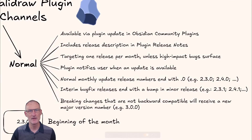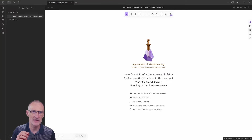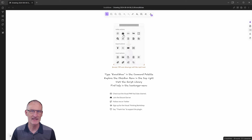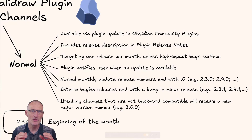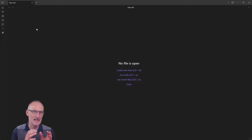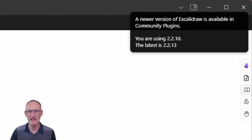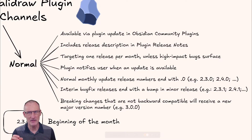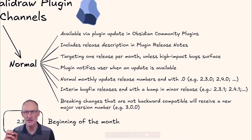Starting with the normal updates: they're going to be available via the Obsidian Community plugins store as until now, and will include a release description in the plugin release notes. I'm targeting roughly one release per month unless there are high-impact bugs that need addressing mid-month. The plugin will notify you when an update is available. The normal monthly update will end with a zero in the release number, so version numbers like 2.3.0, 2.4.0, etc.